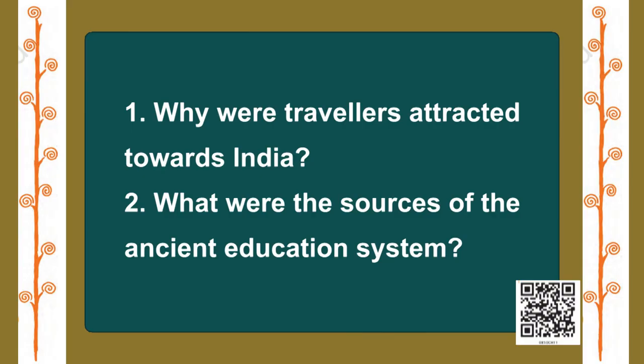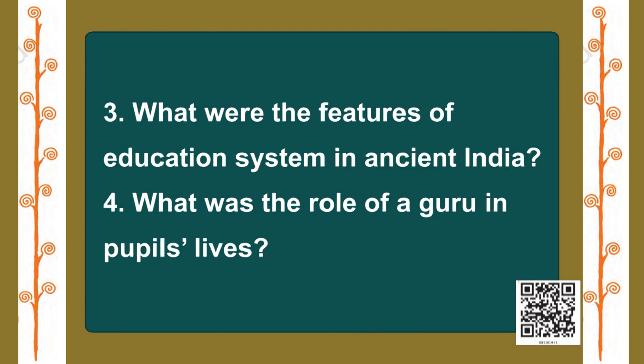So children, we have now come to the conclusion of Part 1. I hope you have all followed what was discussed today. Let us quickly take a look at the comprehension questions. I'd like you to discuss these with your friends. Question 1: Why were travellers attracted towards India? Question 2: What were the sources of the ancient education system? Question 3: What were the features of the education system in ancient India? Question 4: What was the role of a Guru in pupils' lives?